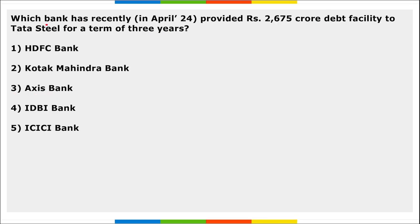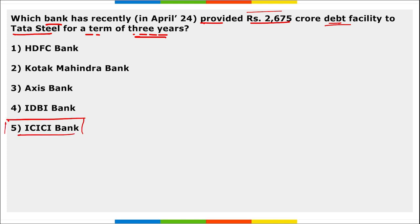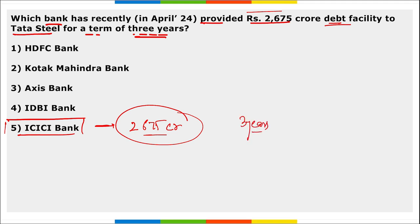Next: which bank has recently provided a 2,675 crore rupees debt facility to Tata Steel for a term of three years? It is ICICI Bank. ICICI Bank provided a 2,675 crore rupees debt facility to Tata Steel for a term of three years.